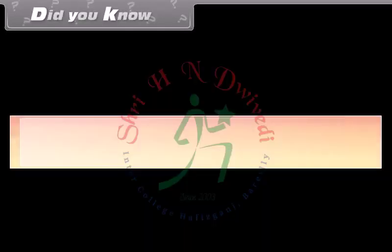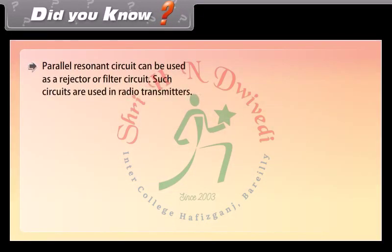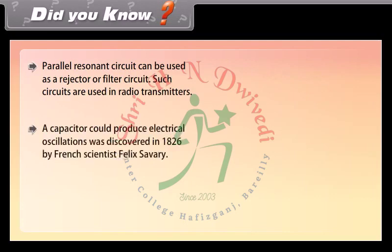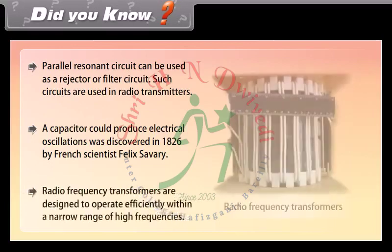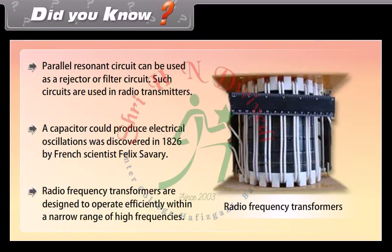Did you know? A parallel resonant circuit can be used as a rejector or filter circuit; such circuits are used in radio transmitters. The discovery that a capacitor could produce electrical oscillations was made in 1826 by French scientist Felix Savary. Radio frequency transformers are designed to operate efficiently within a narrow range of high frequencies.